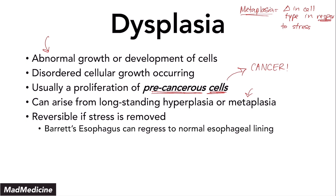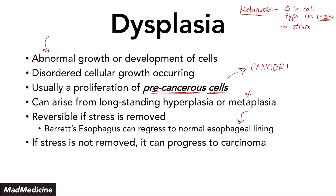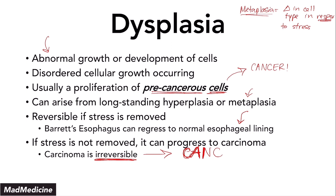One example is Barrett's esophagus, which occurs because of long-standing GERD. If you do not remove the acidic reflux happening in the esophagus, you will develop esophageal carcinoma. But if you treat the GERD — give the patient PPIs and antacids — you can actually regress Barrett's esophagus back to the normal esophageal lining. If you do not remove that stress, it can progress to carcinoma, which is irreversible. That is the cancer we are so afraid of, and it is highly associated with metaplasia and dysplasia. That's why we treat it so aggressively in the clinical setting and why you need to know it for your board examinations.